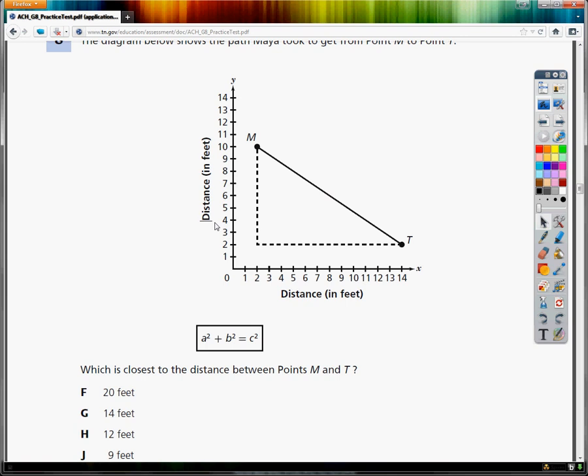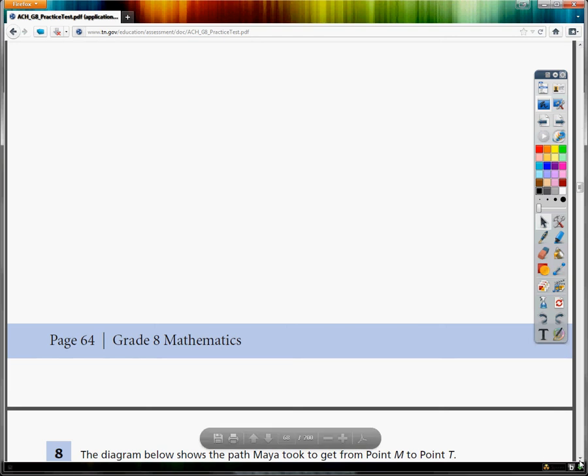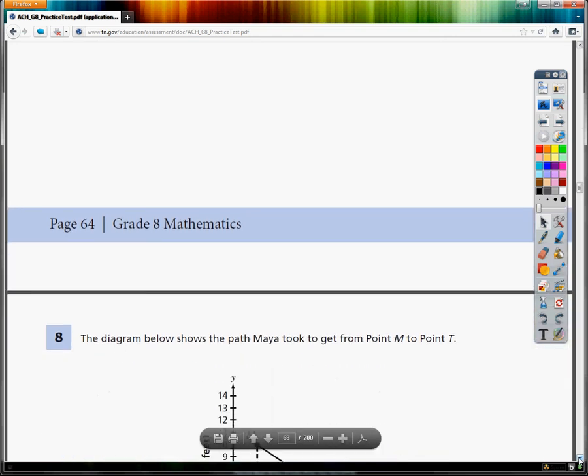This is the 8th grade practice test for math for TCAP. This is question number 8. I couldn't get it all on the screen, so I'm going to try my best to make it look like it's all there. The question asks, the diagram below shows the path Maya took to get from point M to point T.